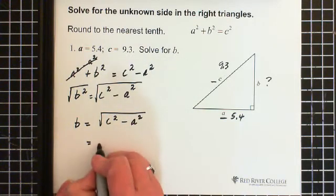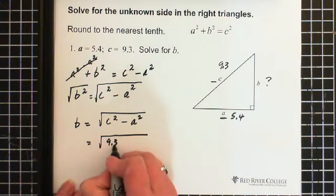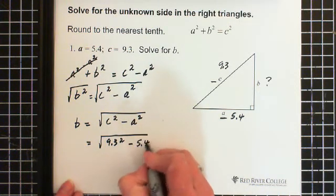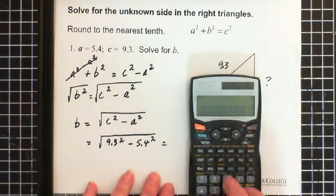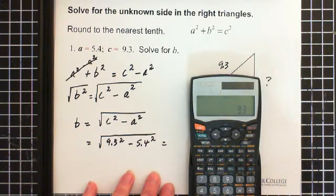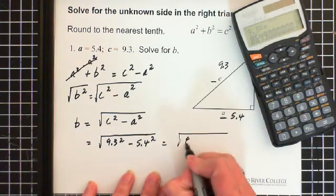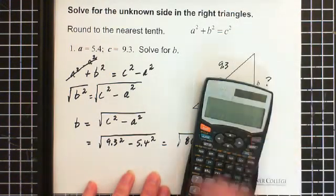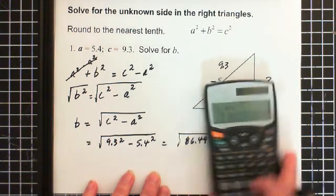Now, all I do is plug in my numbers. Square root of C squared, C is 9.3, and that is squared. Minus A, which is 5.4, and that is squared. So now I get my calculator. 9.3 squared equals 86.49. So we have the square root of 86.49 minus, and 5.4 squared equals 29.16.